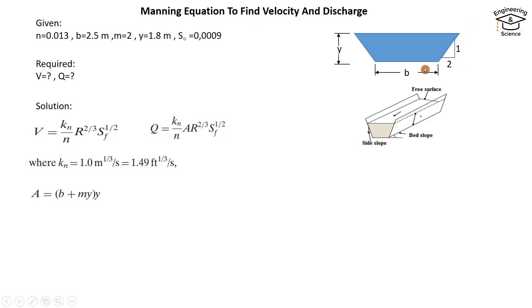b equals 2.5 m, side slope m equals 2, and y (the depth) equals 1.8. Then, after putting the values, we get the area equal to 10.98 m².